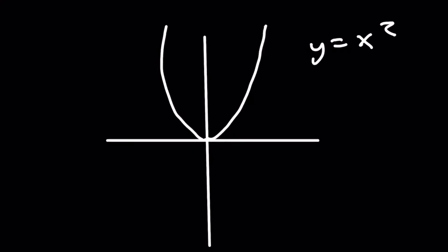It works by drawing a vertical line that is parallel to the y-axis. If I'm able to draw a vertical line that is parallel to the y-axis and it's able to touch more than one point on my graph, then that means the relation on the graph is not a function.